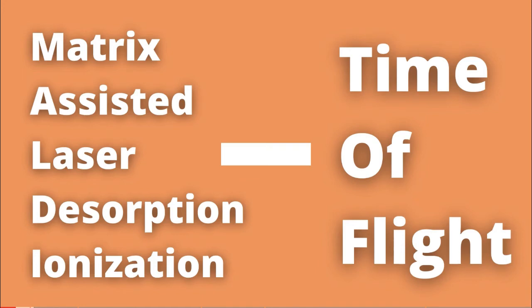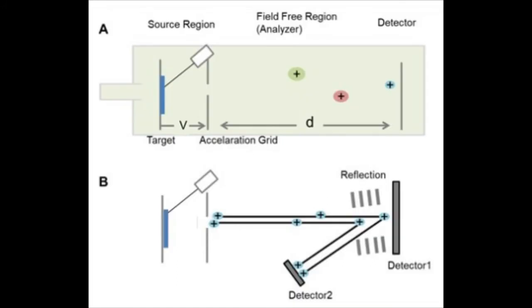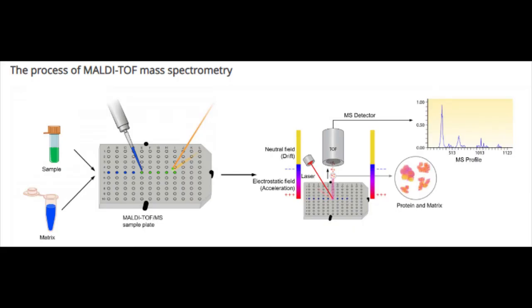The next step in the process confuses you, and you remember your professors mentioning time of flight, but it's just a vague memory. The MLS looks at you knowingly and says, "You're not an MLS yet, kid." The next step passes the ionized molecules through the vacuum tube to hit the detector. The amount of time it takes for the molecule to hit the detector is the time of flight. Small molecules travel faster than large molecules. A fingerprint spectrum is created that is unique to each organism, and is run through a database to get the identification of the organism.